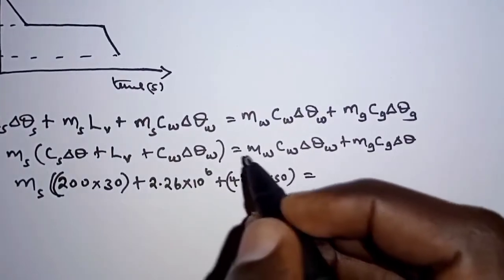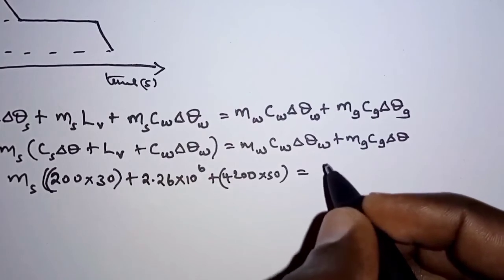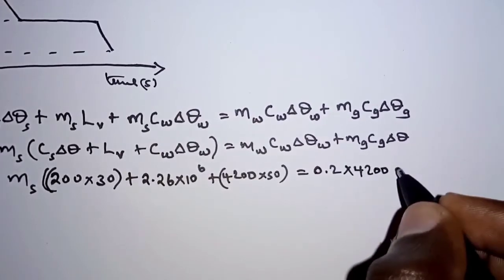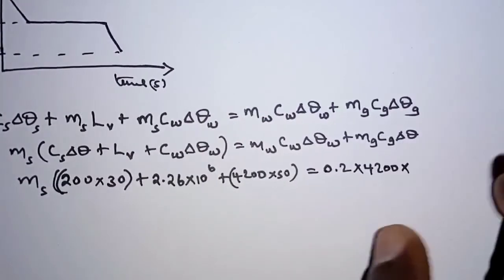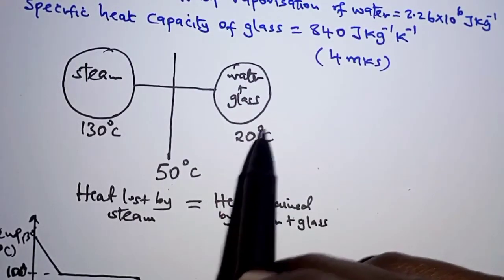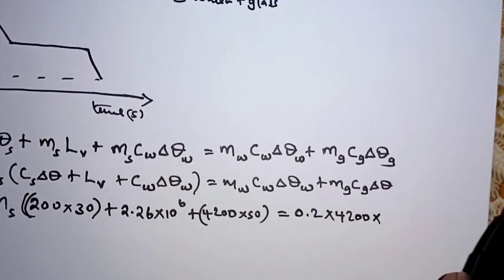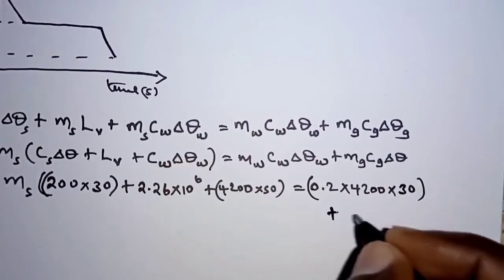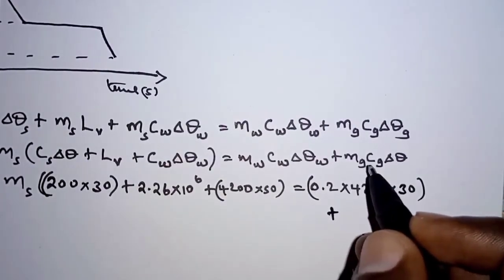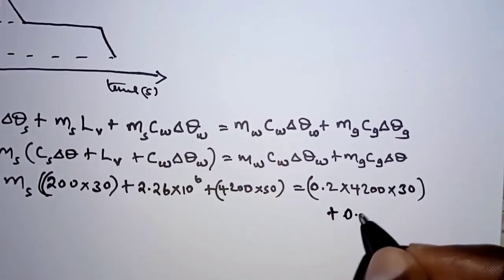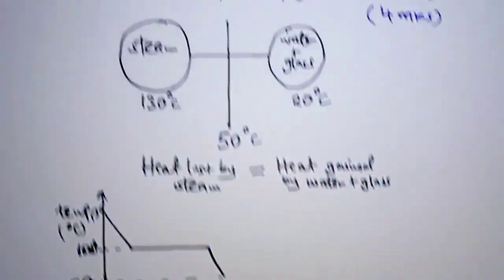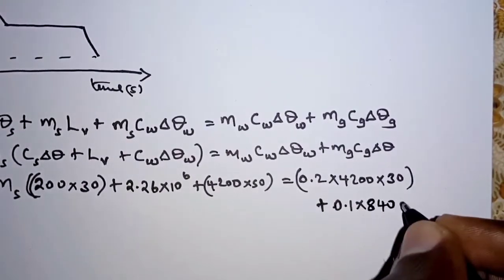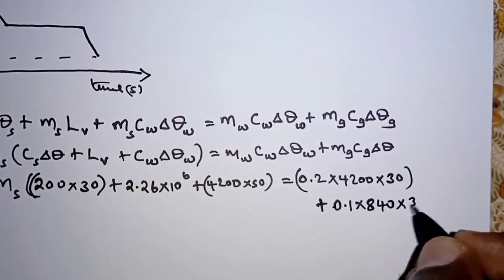On the right-hand side: the mass of water is 200 grams = 0.2 kg, multiplied by specific heat capacity of water 4200, multiplied by temperature change 30 (from 20 to 50°C). Plus the mass of glass, 100 grams = 0.1 kg, multiplied by specific heat capacity of glass 840 J/kg/K, multiplied by temperature change 30.